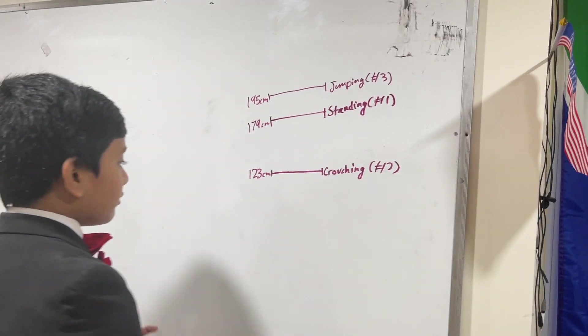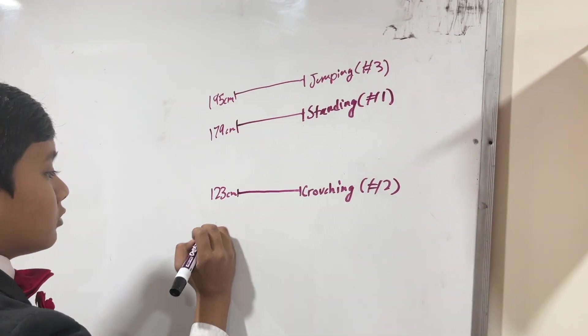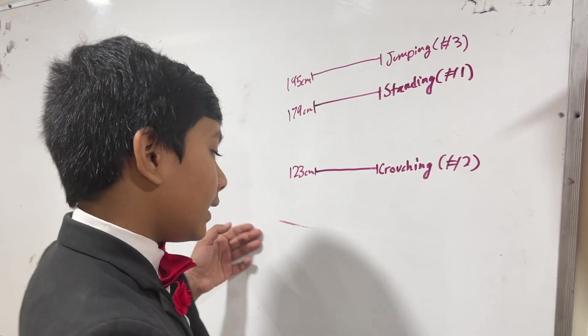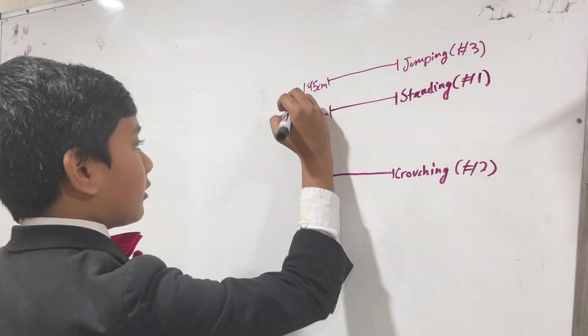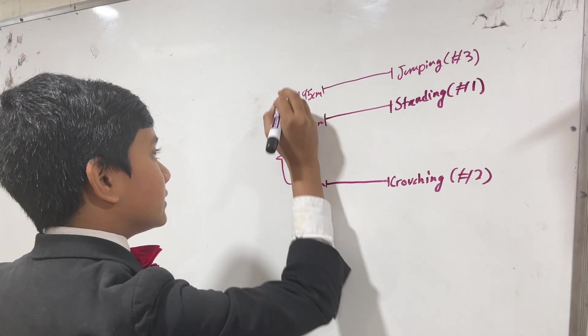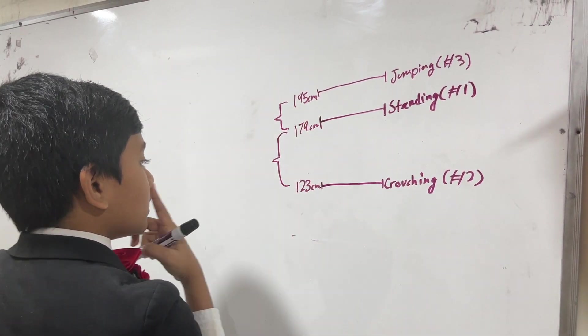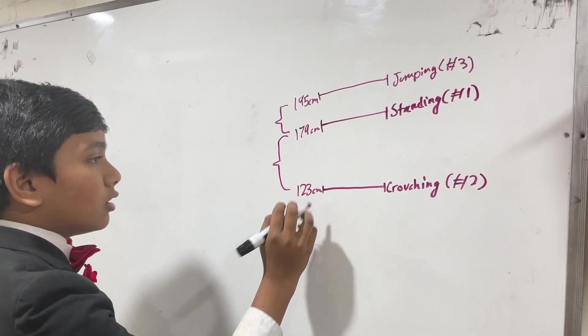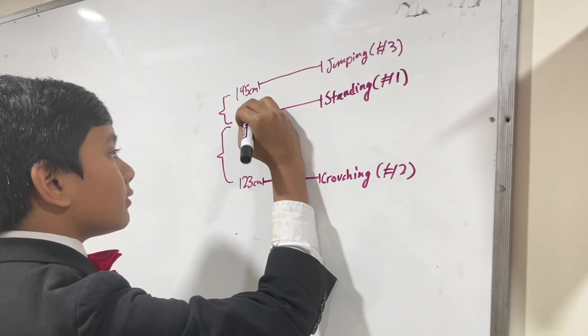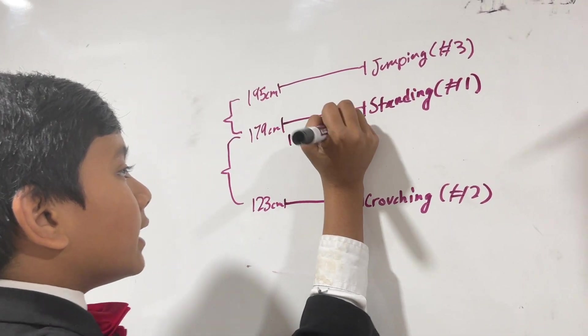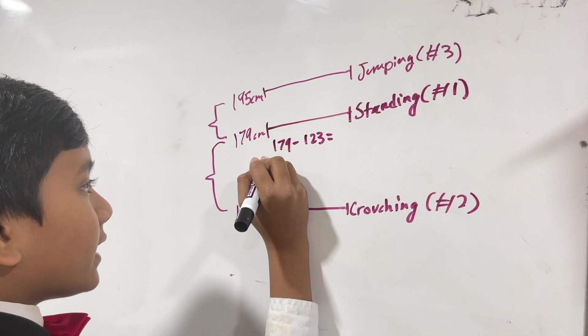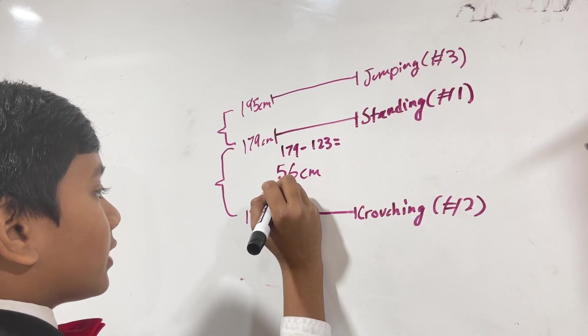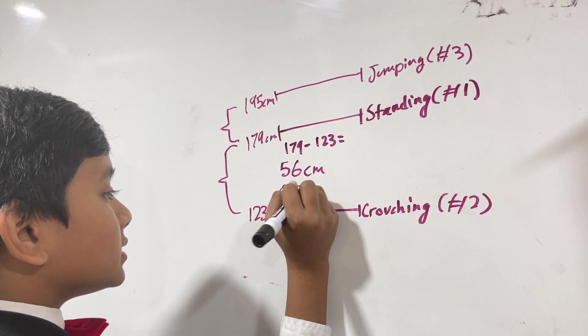We really don't care about how far these were off of the ground. What we do care about is the differences between crouching and standing, and standing and jumping. What is the difference between standing and crouching? We have 179 minus 123 is equal to 56 centimeters, but converted to meters, that's 0.56 meters.